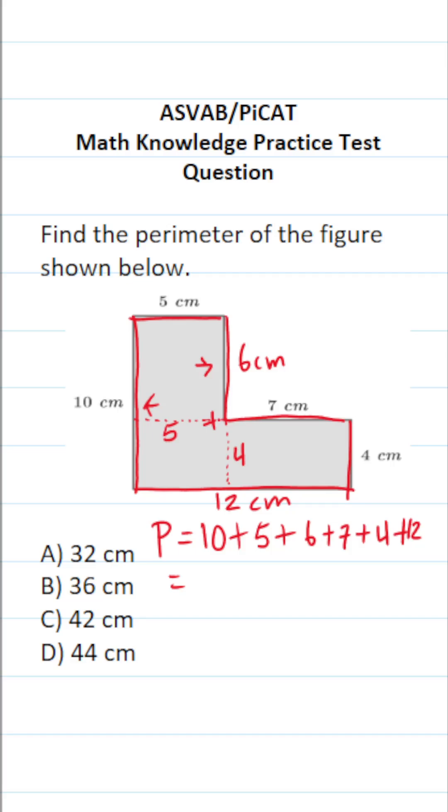All right, so let's add all this up. 10 and 5 is 15. 7 and 6 is going to be 13. 4 and 12 is going to be 16. And let's keep working this out. 15 and 13 is going to be 28. So this is 28 plus 16. And if you can't do this part mentally, do it off to the side. We have 28 plus 16. 8 and 6 is going to be 14, carry a 1, 2, 3, 4. So the perimeter of this composite figure is going to be 44 centimeters. So the answer to this one is D.